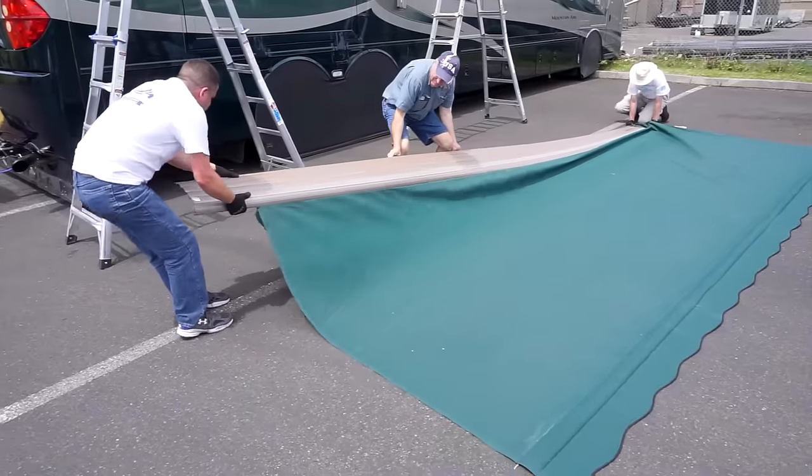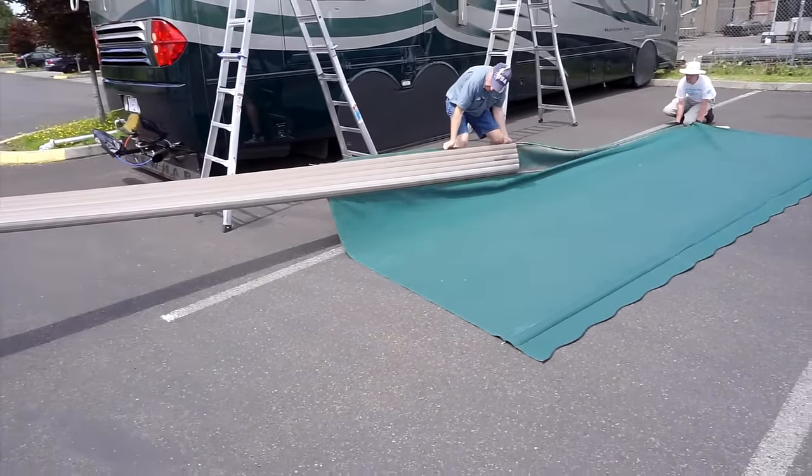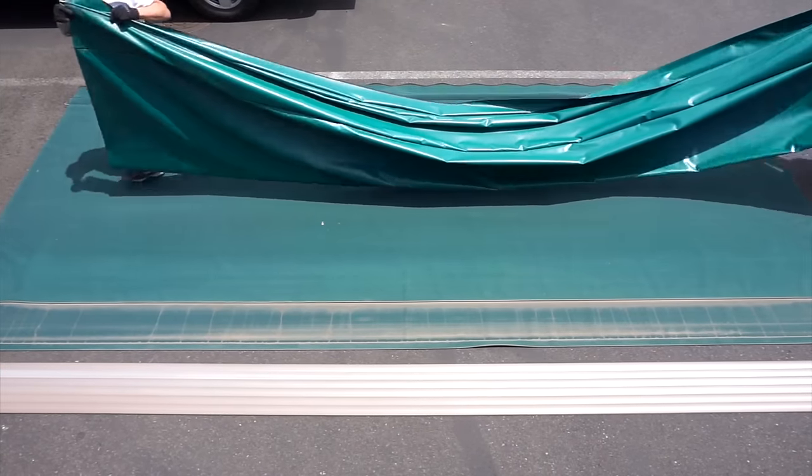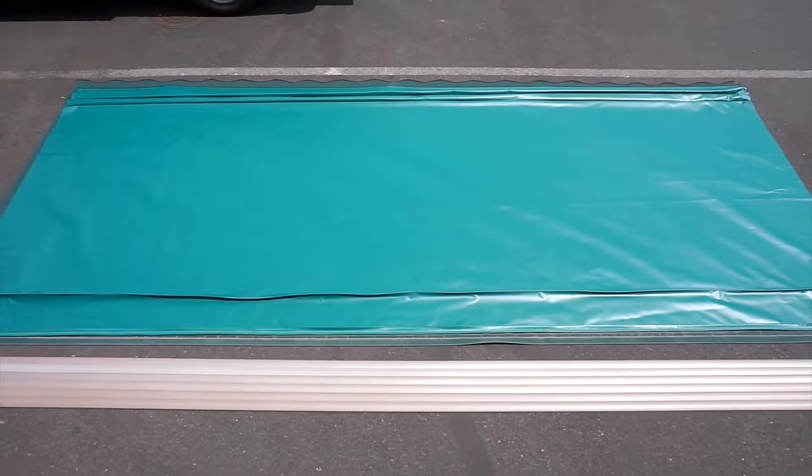With a helper holding the far end of the fabric, pull the wrap completely off. Now you can use the old material as a tarp to lay out your beautiful new TuffTop fabric.